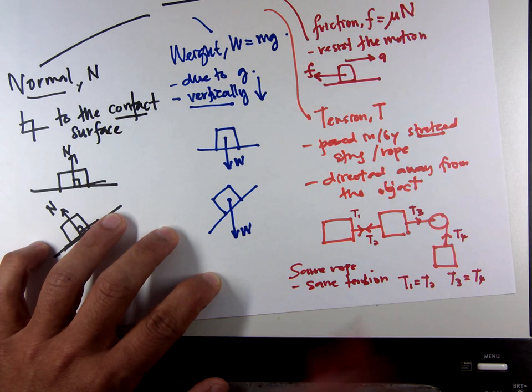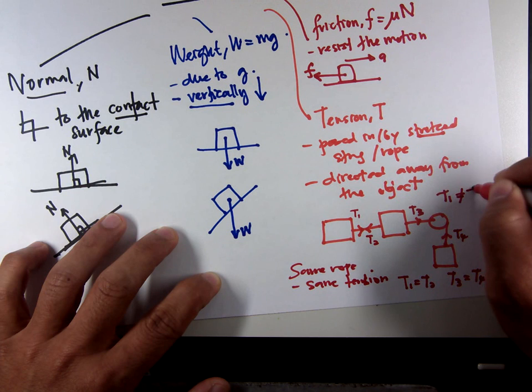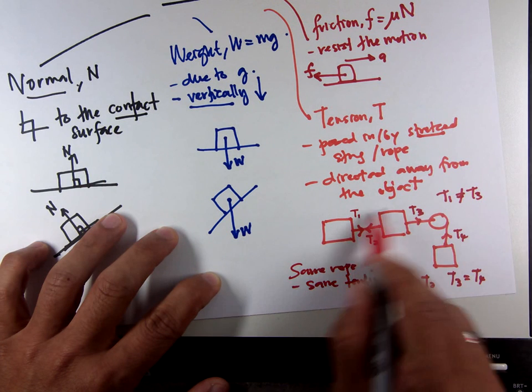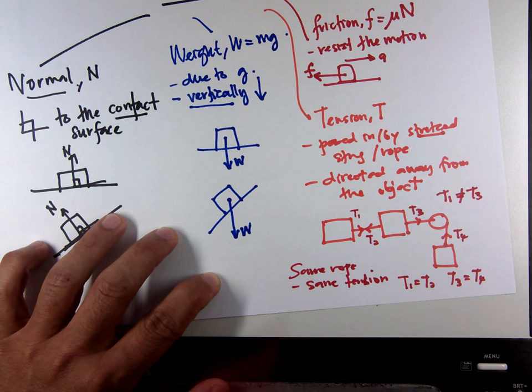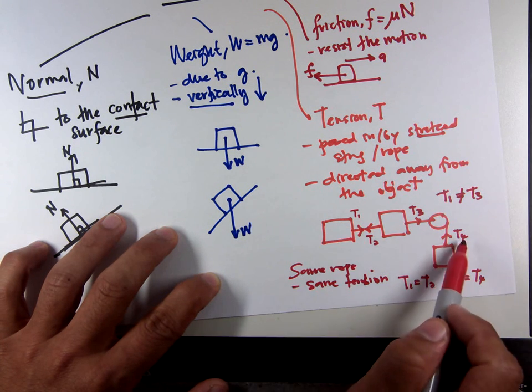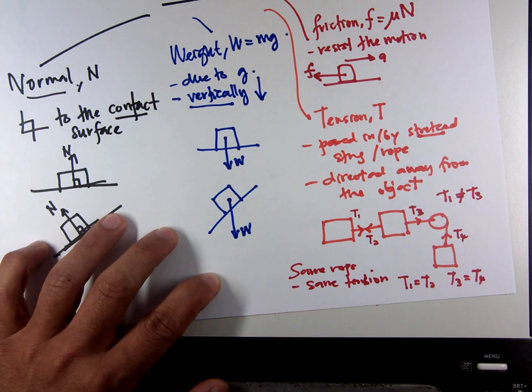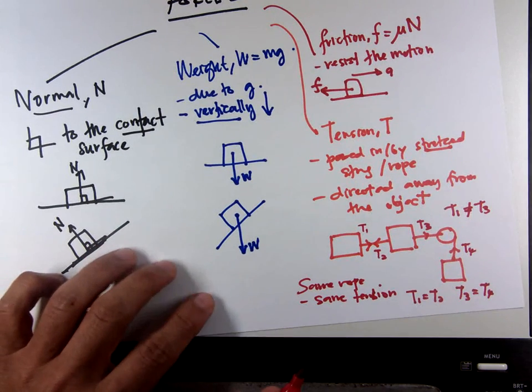But T1 is not equal to T3, already separated by this object. The same goes to T1 is not equal to T4, because separated by something else. That is the concept of tension.